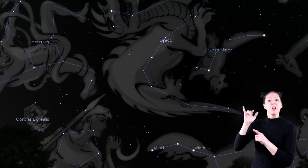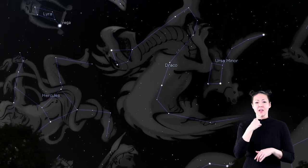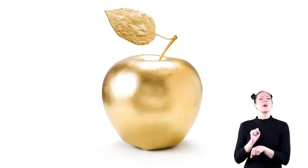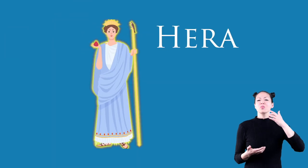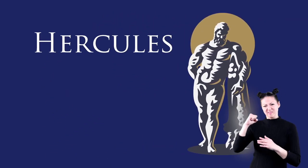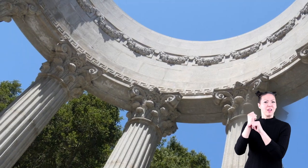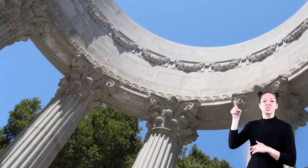There are a lot of different myths about Draco. One common myth says that Draco was given the job of guarding some golden apples for Hera, the wife of Zeus. But Hercules slayed Draco to get the apples. Hera was so sad when Draco was killed, she placed him in the sky.